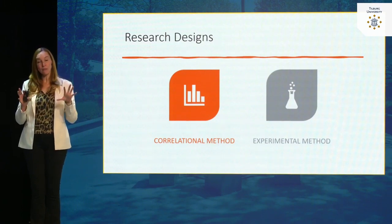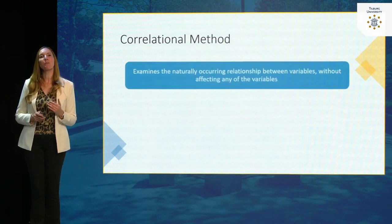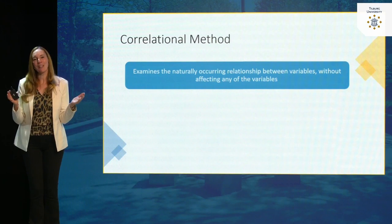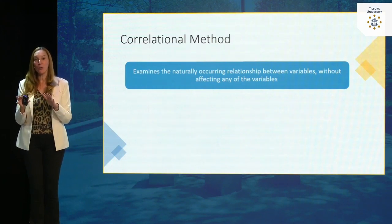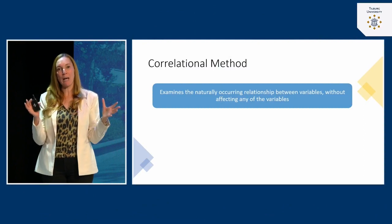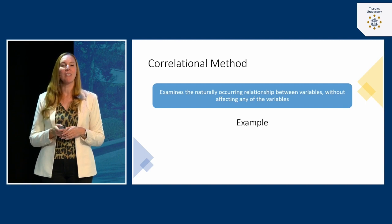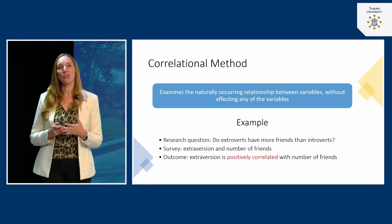It's very important for you to know the difference between the two, so pay attention. Let me first start by talking about the correlational methods. If we use this method, what we can do is examine the naturally occurring relationship between variables. We are not influencing or impacting a variable — we just look at how variables naturally relate to each other.